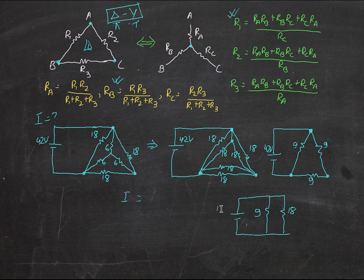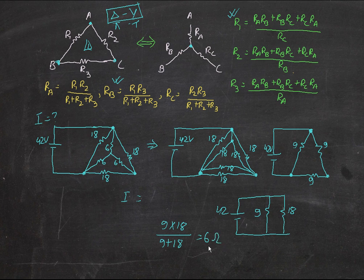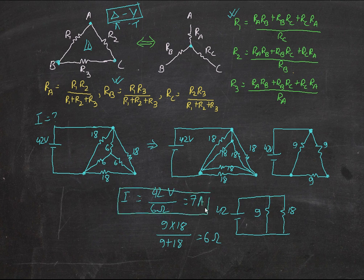Now we do a simple parallel calculation: 9 times 18 divided by 9 plus 18. Calculating that gives 6 ohms total resistance. So I equals V over R — 42 volts divided by 6 ohms — which gives 7 amperes. That's the total current for this circuit.